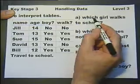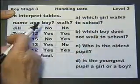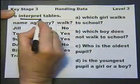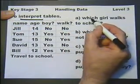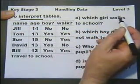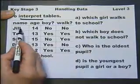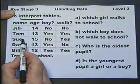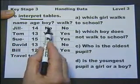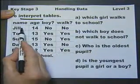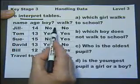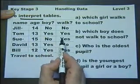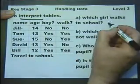Let's answer some questions to see if we can interpret the table. 'Which girl walks to school?' There are two girls — identified by 'no' in the boy column. The one that walks is marked 'yes', so Sue walks.